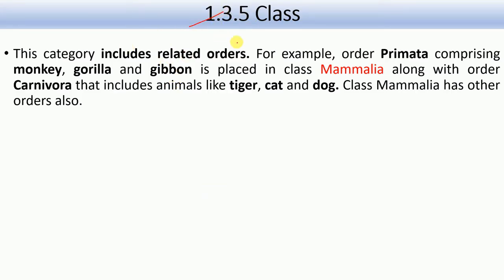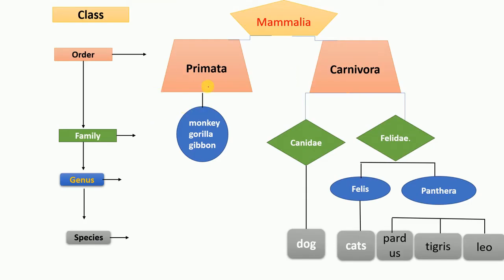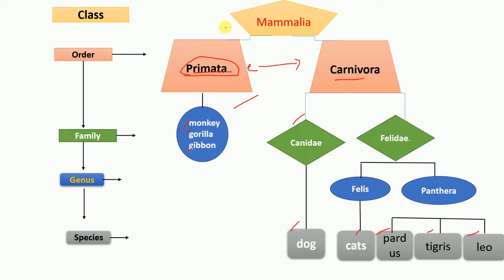Class is a group of orders — this category includes related orders. For example, Primata: monkey, gorilla, gibbon, and even humans are all primates, so we all fall under one order — Primata. Primata and Carnivora share similar characteristics — namely the presence of mammary glands. The dog, cat, Pardus, Tigris, and Leo all have mammary glands. That is why they all fall under one class: Mammalia. So this is order, family, genus, and species.